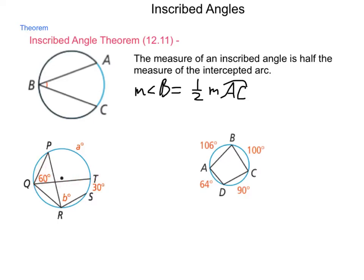Well, according to this inscribed angle theorem, that is half of that arc. So, the measure of angle A, or measure of arc A, is 120 degrees.